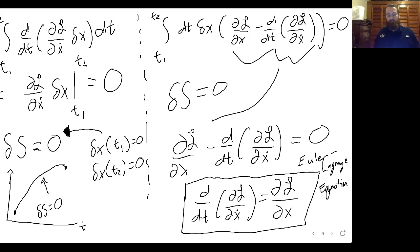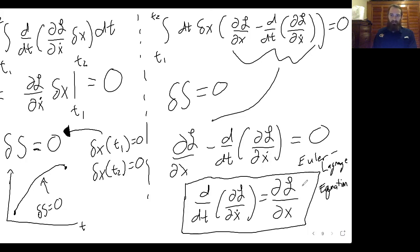So it is this principle of the action being constant for the path that a particle will take that leads us to being able to write down our Euler-Lagrange equations and use those equations to determine the equations of motion for our particle. This has been a Dr. Strassbaugh lecture.